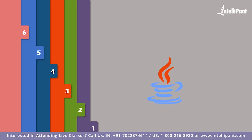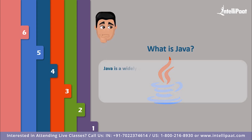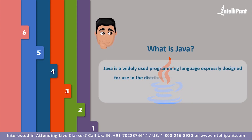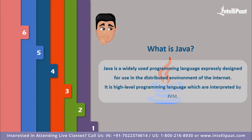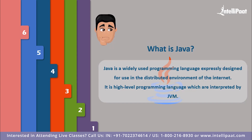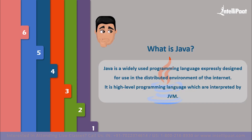Without any further delays, let's get started. Java is one of the widely used programming languages, expressly designed for use in the distributed environment of the internet. It is a high-level programming language interpreted by the Java Virtual Machine. Java also supports multi-platform and can run on different platforms including Macintosh, Windows, Unix computers, and many more.